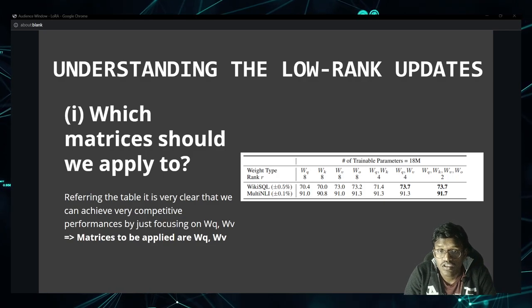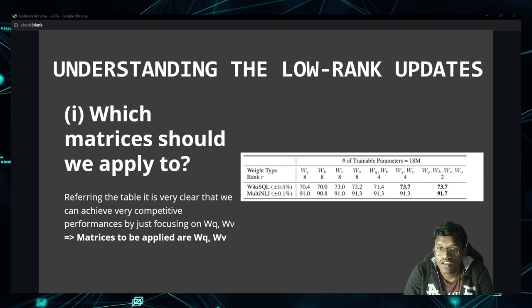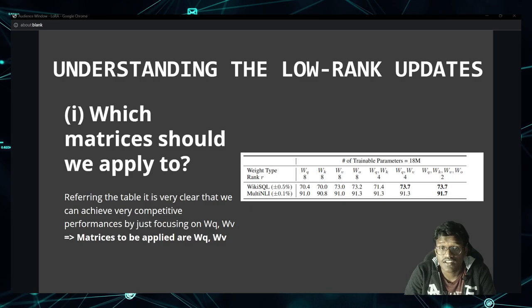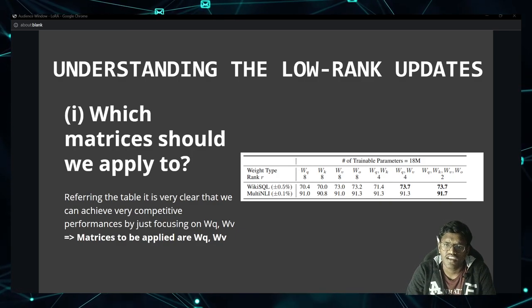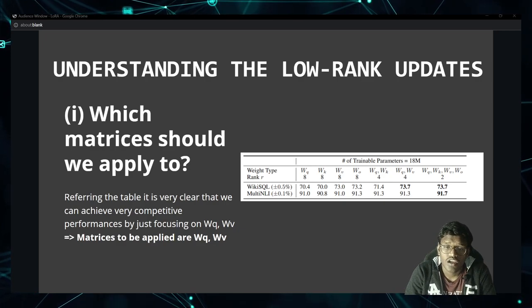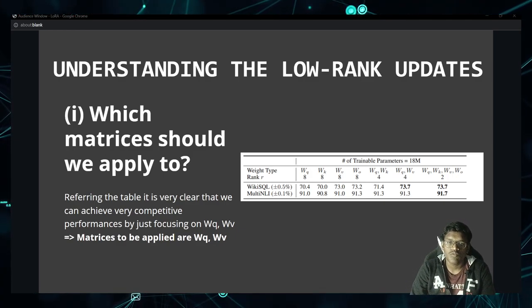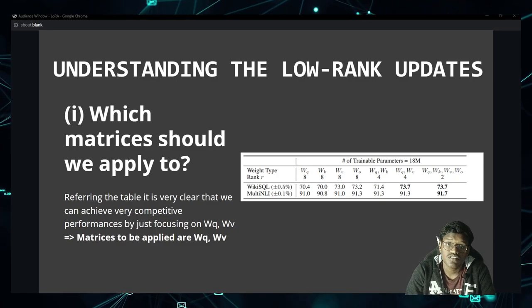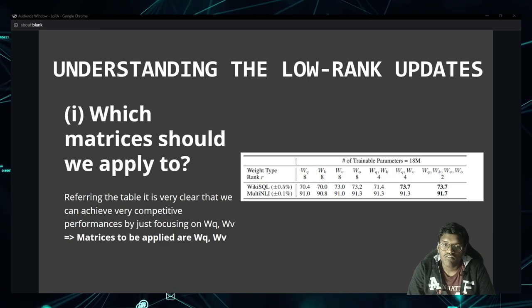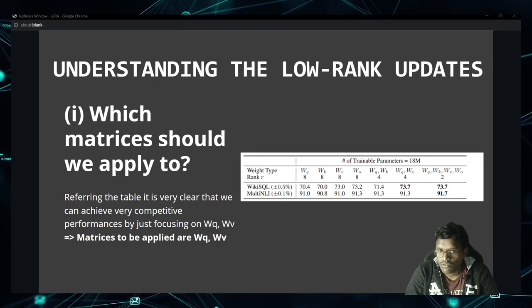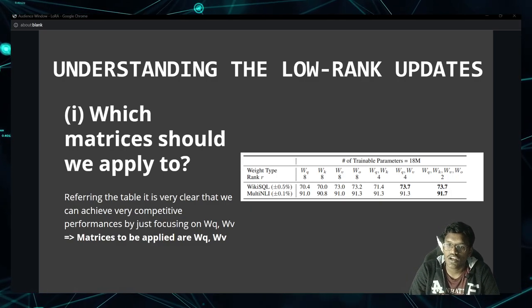The table says we can achieve competitive performance just focusing on WQ and WV, which answers the question of which matrices to apply LoRA to — WQ and WV. For optimal rank: they experimented with ranks r=1, 2, 4, 8, and 64 on WQ and WV. For WikiSQL: r=1 gives 73.4, r=2 gives 73.3, r=4 gives 73.7, r=8 gives 73.8. But for large rank r=64, performance degraded to 73.5 — you should not use large ranks.